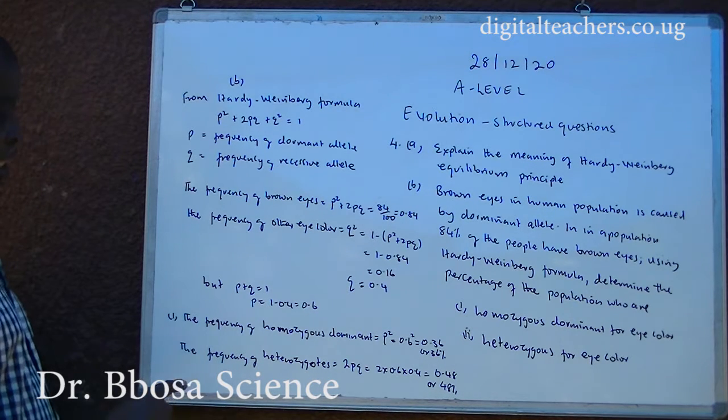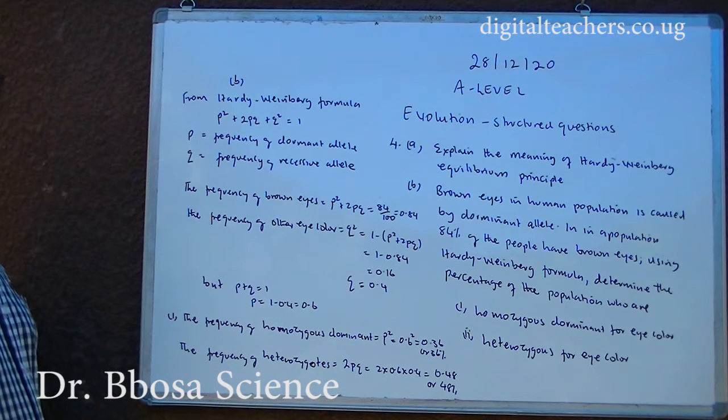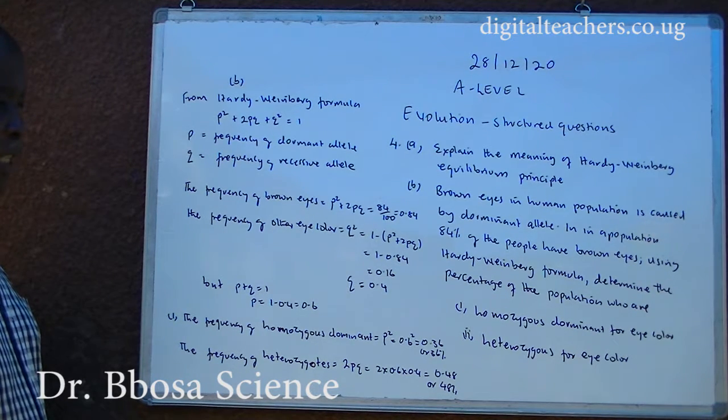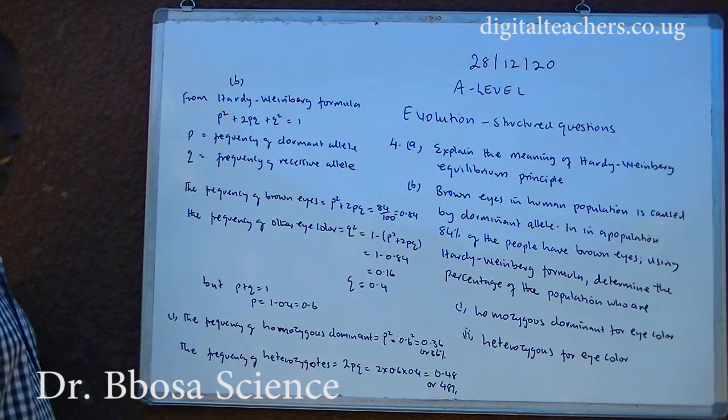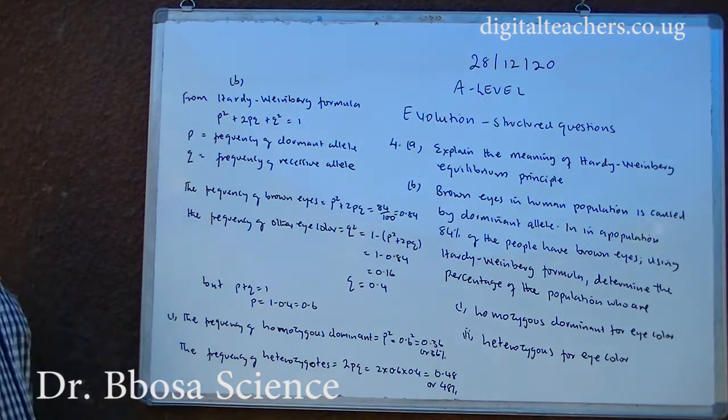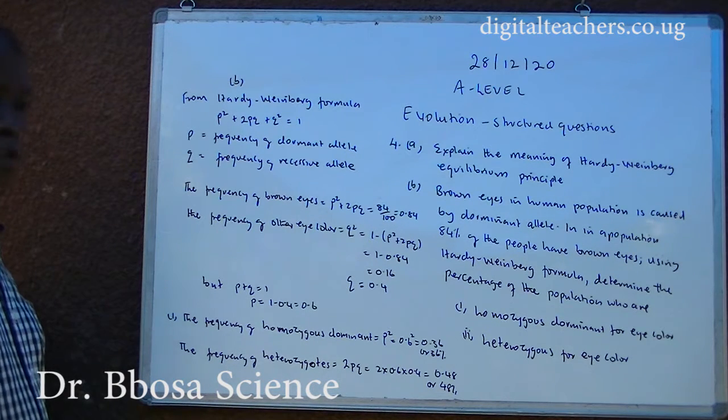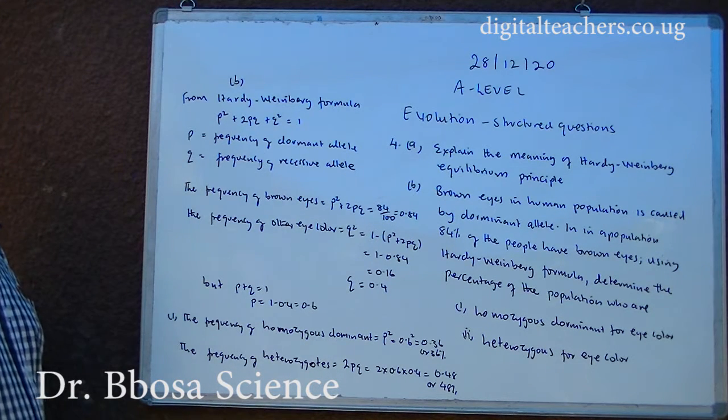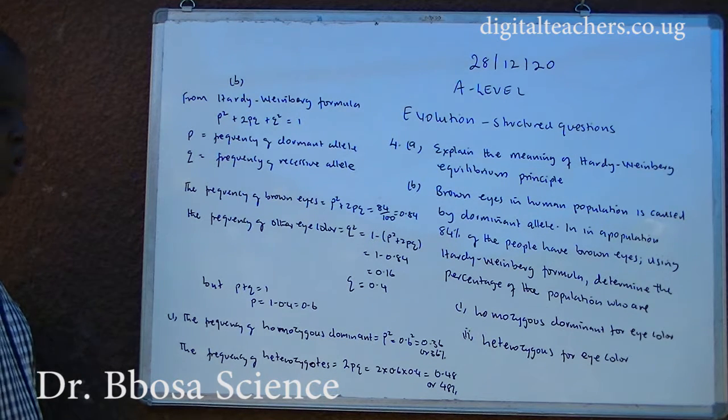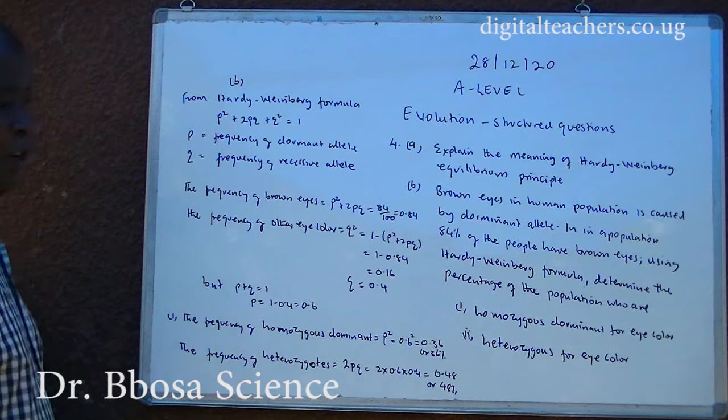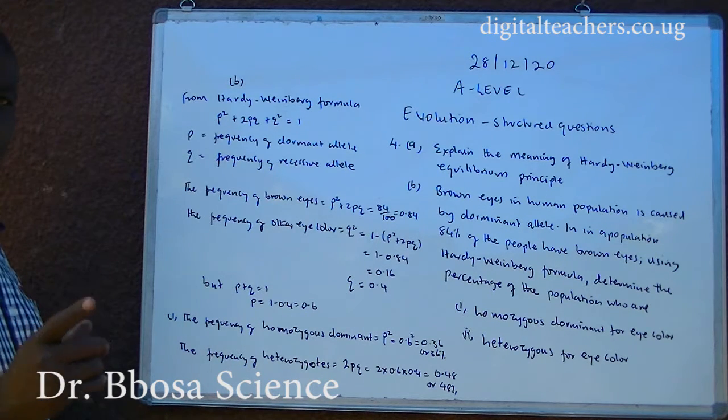The frequency of homozygous dominant equals p squared, equals 0.6 squared, equals 0.36, or 36 percent. The frequency of heterozygous equals 2pq, which equals 2 times 0.6 times 0.4, which equals 0.48, or 48 percent.